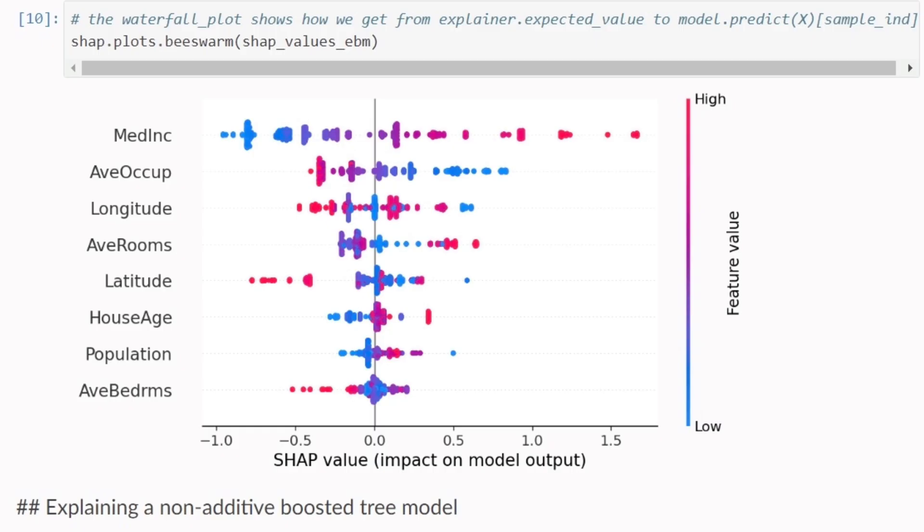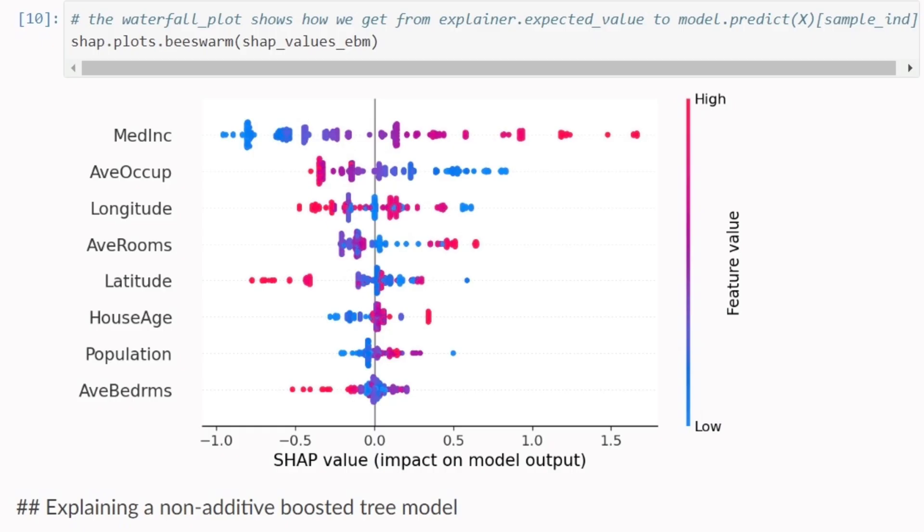Once you take that 2.215 and sum all these SHAP values for each feature that we see in the waterfall plot to it, we end up with the model's prediction for that specific observation — that is 2.846. Another plot I really like, because you get to see the big picture for everything, is the beeswarm plot. Here we've moved on from plotting one single observation to plotting the SHAP values for all of the observations by feature.